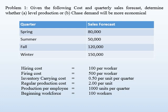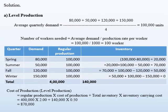For level production, as the name suggests, we produce a standard quantity every quarter throughout the year. That standard quantity is obtained by taking the average of the demand forecast for each quarter, giving us 100,000 units as the average quarterly demand. The number of workers needed to produce this quantity is obtained by dividing 100,000 by the production rate of 1,000 units per worker, giving us 100 workers required, which is the same as the beginning workforce. If it were higher or lower, we would need to hire or fire workers accordingly.